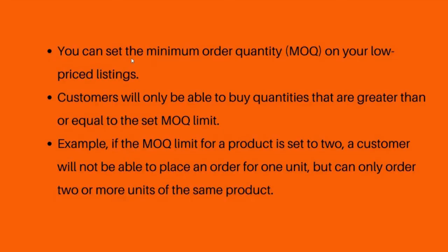You can set the minimum order quantity on your low-priced listings. Customers will only be able to buy quantities that are greater than or equal to the set MOQ limit. For example, if the MOQ limit for a product is set to two, a customer will not be able to place an order for one unit, but can only order two or more units of the same product.